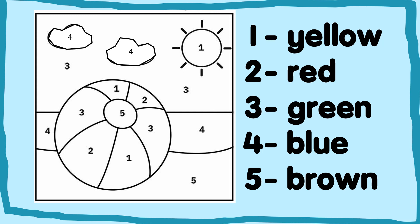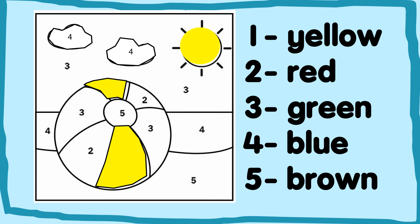Let us see. The first one is yellow. Here is 1, so 1 is yellow. What else is yellow? 1 yellow and another one yellow. The sun is yellow. So, 2 is red. Where is 2? This is 2. Red and red.